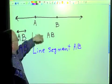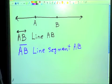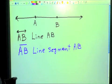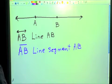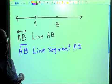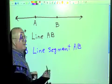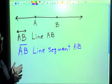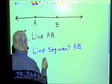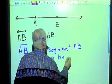Since a line segment starts and stops, can we measure it? Of course. That's like saying, how far is it on US 380 from Denton to Decatur? We can measure that — start in Decatur, hit the odometer. Is it the same distance from A to B as from B to A? Yes. It's the same distance from Decatur to Denton as from Denton to Decatur. So a line segment can be measured.